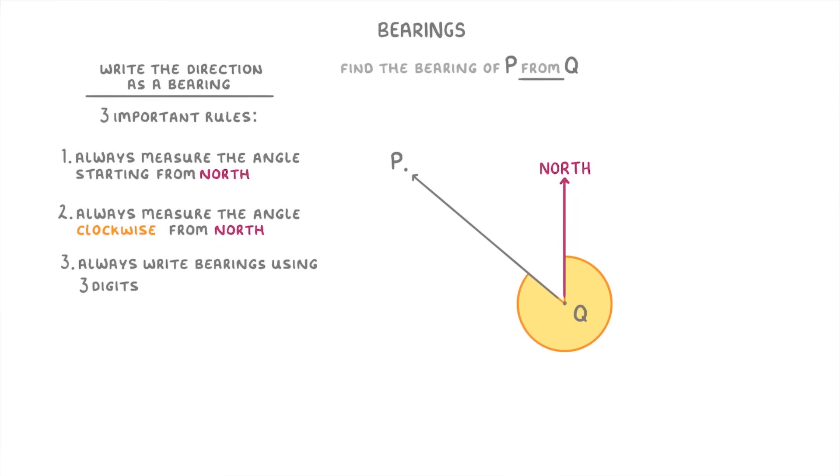And in this case, this angle is 310 degrees. Then as a last step, we need to make sure that our angle has three digits, which in this case it already does, so our bearing is 310 degrees.